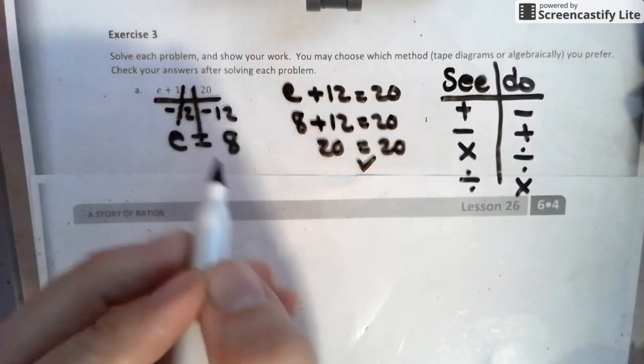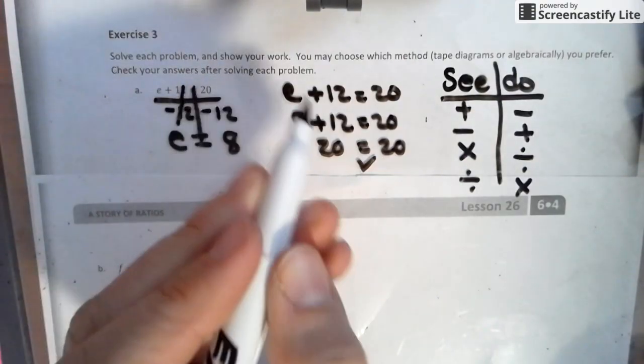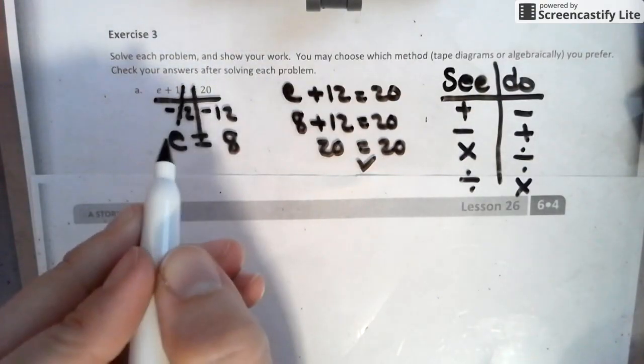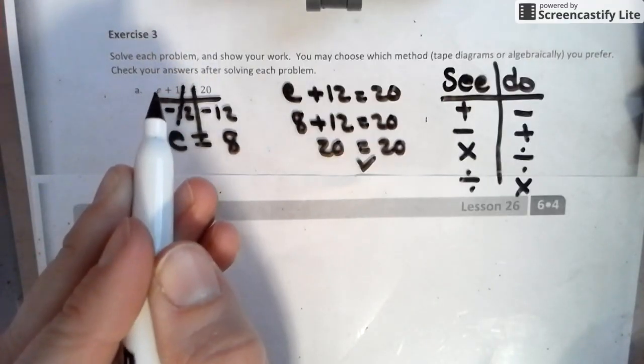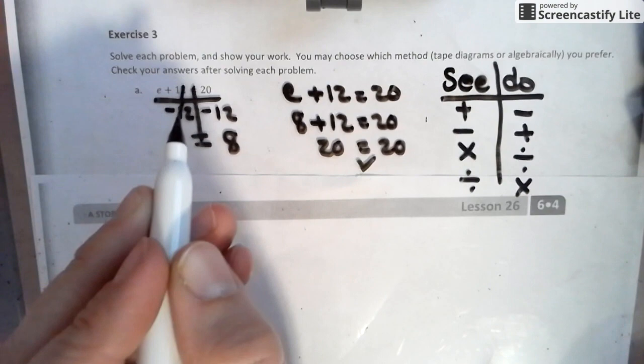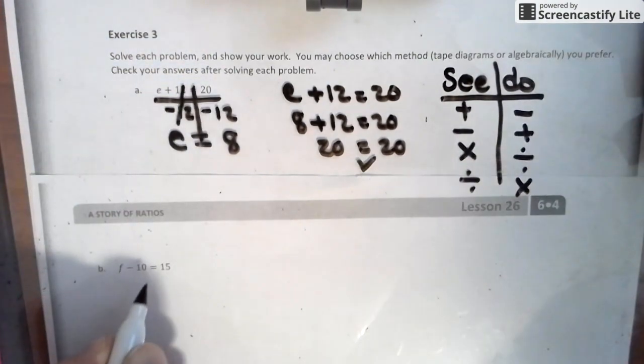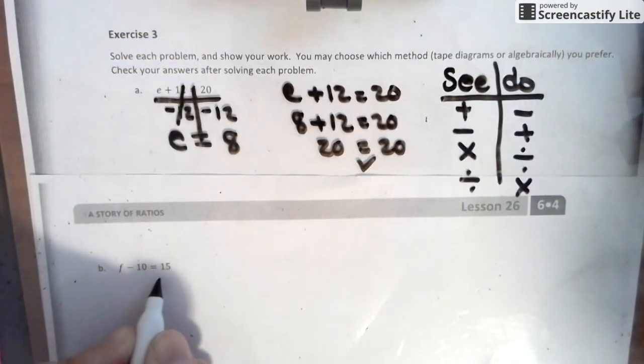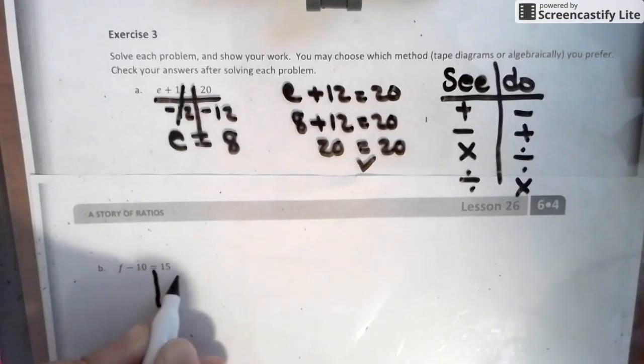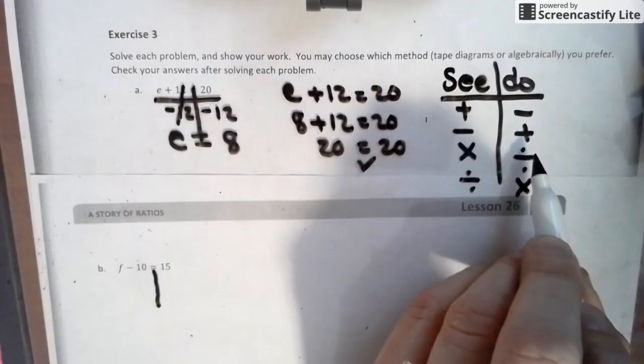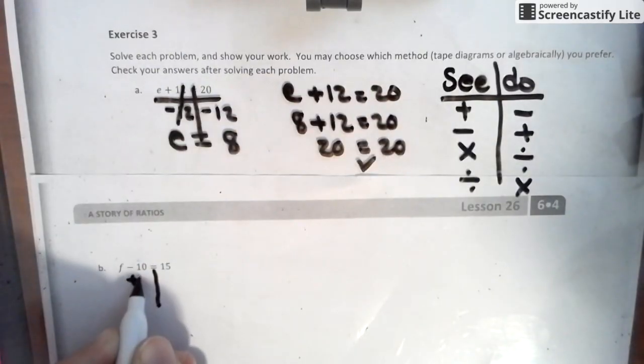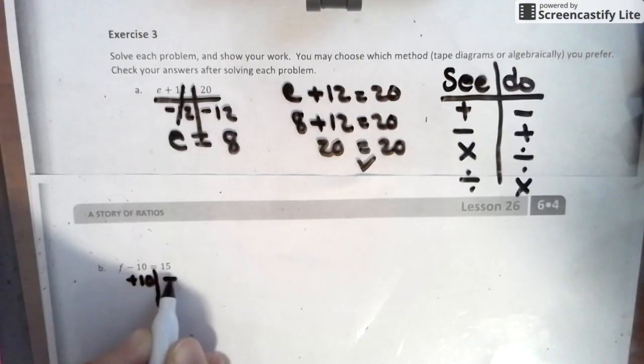And that's 20 equals 20. That is a check. So that's how we solve it and that's the check. Now you just can't jump and say E equals 8 because you just plugged it in and say, hey, 8 plus 12 is 20. You got to show that step in between. So looking down here, we have F minus 10 equals 15. Well, we draw our line. You don't have to draw it here if you don't want to. Instead of subtraction, we do addition, so we're going to add 10. What we do to one side, we have to do to the other side.